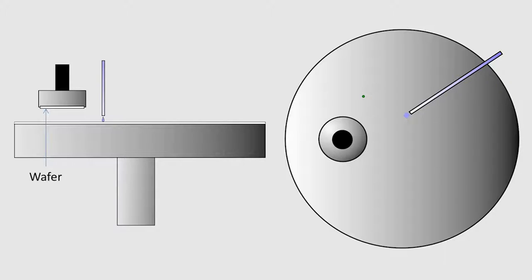First, the wafer is placed into a rotating carrier arm, which holds the wafer face down onto a rotating polishing pad.